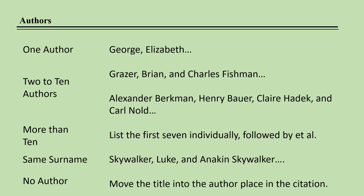When there is more than one author, only the first author's name is reversed, and the item is filed alphabetically by the first author's surname. The Oxford comma is used before the word AND, which precedes the last author listed. The Oxford comma is a comma used after the penultimate item in a list of three or more items, before the word AND or the word OR. See the author's example on this slide. An item with more than ten authors requires a different treatment: list the first seven authors individually, and then after the seventh author's name, use the abbreviation et al., meaning and others. If there is no author attributed to the work, begin the citation with the title of the work and alphabetize according to the first full word of the title, leaving off any leading articles such as the, a, or of.